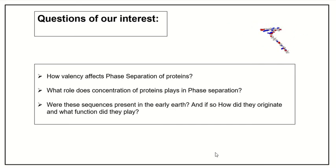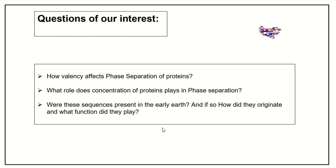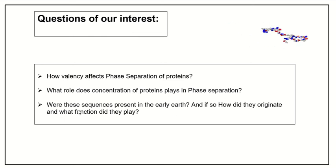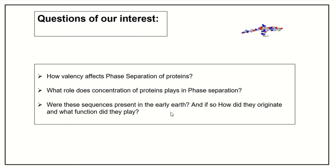These are our questions of interest that I will basically be discussing today: How does valency affect phase separation of proteins? What role does concentration of proteins play in phase separation? Were these sequences present in the early earth? And if so, how did they originate and what function did they play?